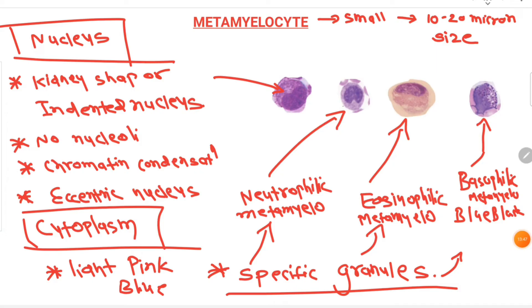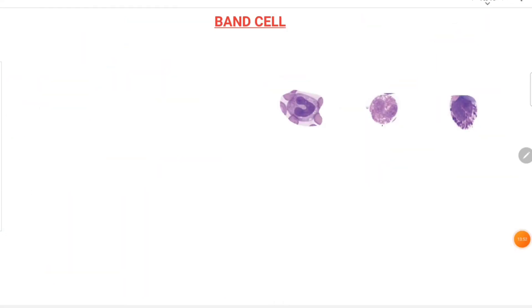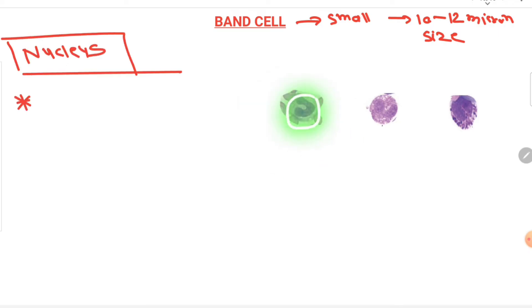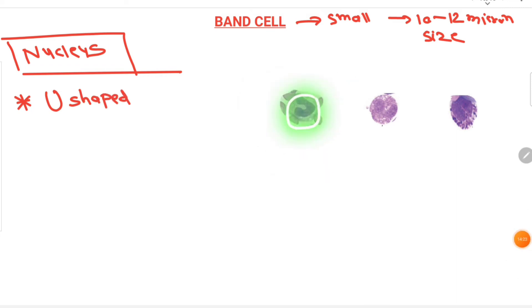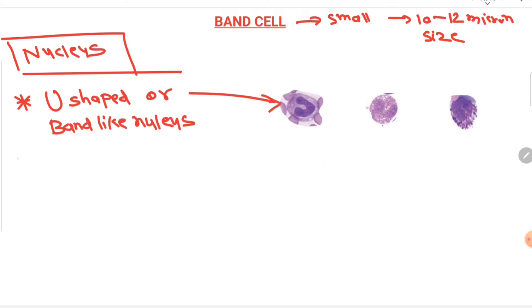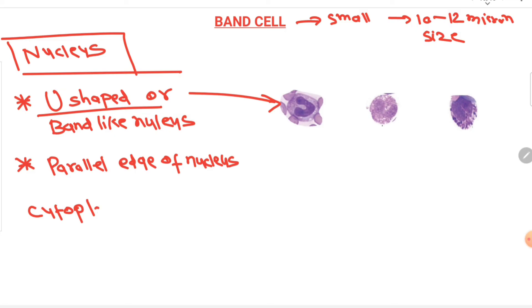The fifth cell is the band cell, which is small — 10 to 12 microns in size. The nucleus is U-shaped, also described as band-shaped, with parallel sides, as you can see in the diagram. This is a characteristic U-shaped, band-like nucleus, and the chromatin is condensed.